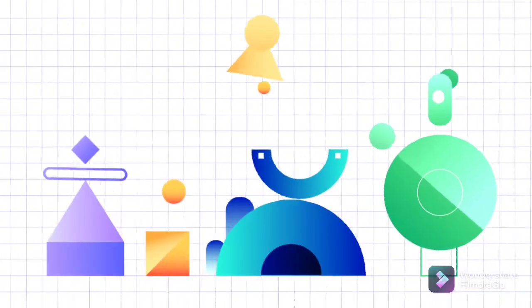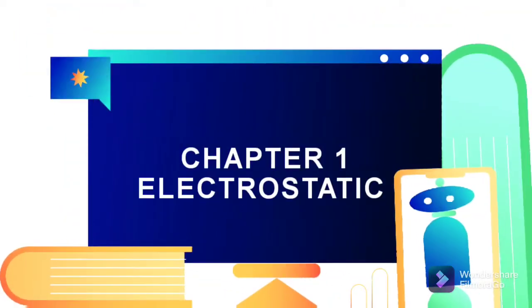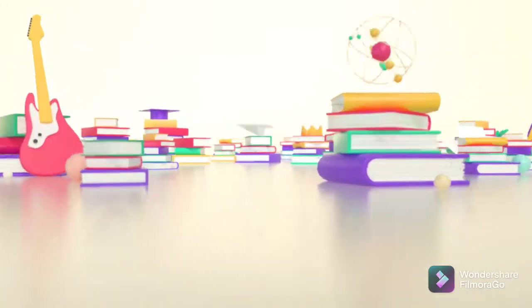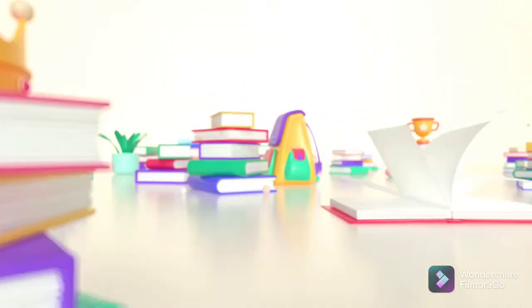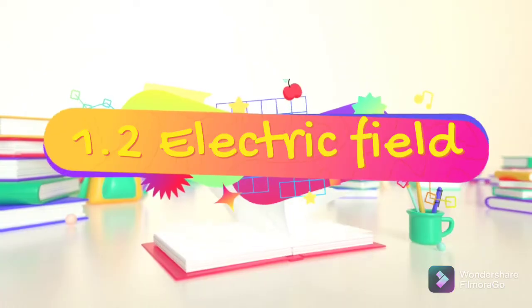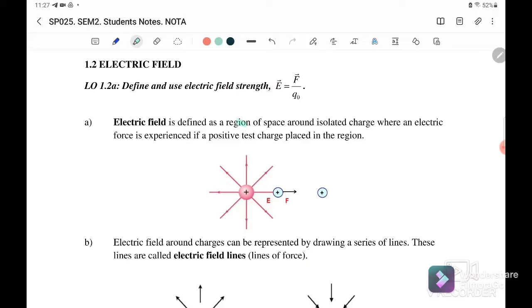Hello, welcome back to my channel. Today we will continue learning chapter 1, electrostatics. In this video we'll continue discussing section 1.2, electric field. Electric field is defined as a region of space around an isolated charge where an electric force is experienced if a positive test charge is placed in the region.